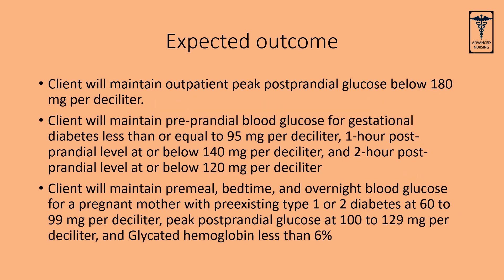Client will maintain outpatient peak postprandial glucose below 180 mg per deciliter. Client will maintain preprandial blood glucose for gestational diabetes less than or equal to 95 mg per deciliter, one hour postprandial level at or below 140 mg per deciliter, and two hour postprandial level at or below 120 mg per deciliter.